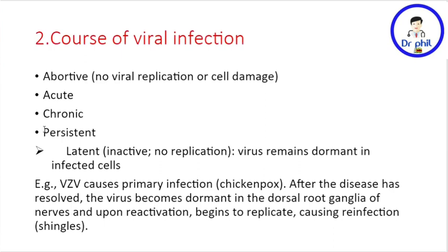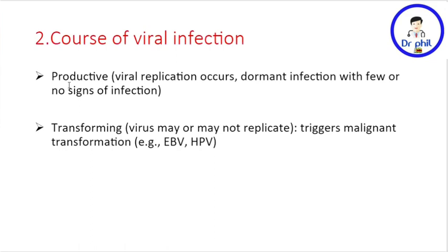Another important type is persistent infection, under which we can discuss the latent phase. During the latent phase, the virus is inactive and not replicating; it remains dormant in infected cells. A simple example is Varicella-Zoster Virus, which causes chickenpox. After the disease resolves, the virus becomes dormant in the dorsal root ganglia of the nerves, and upon reactivation it begins to replicate, causing re-infection also called shingles.